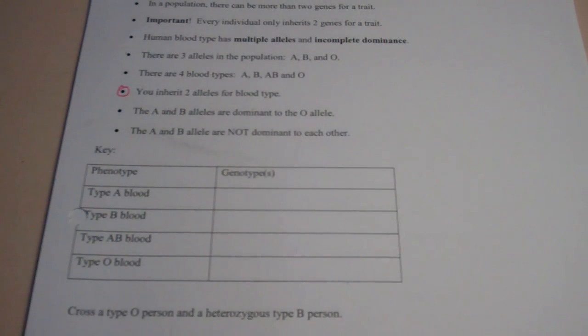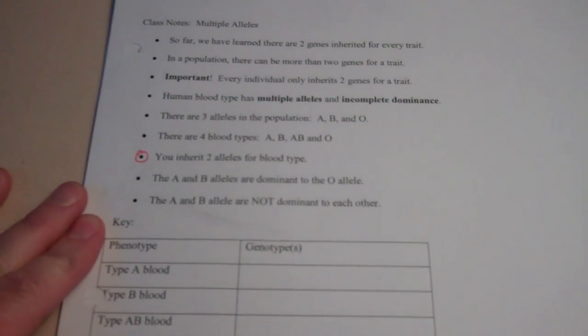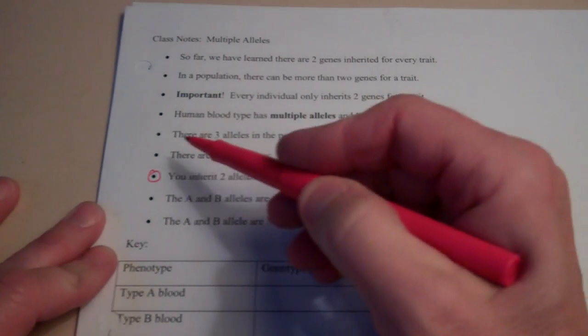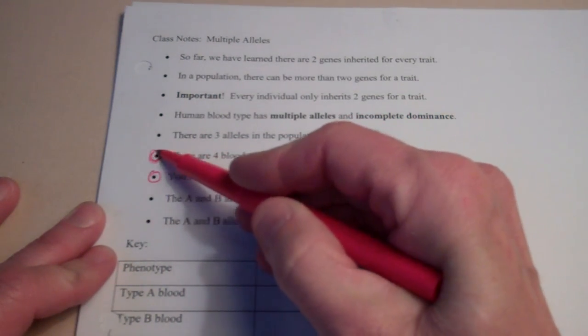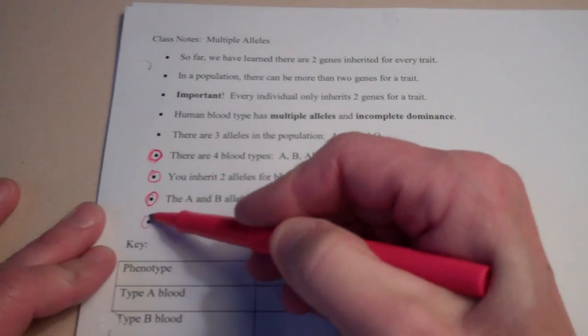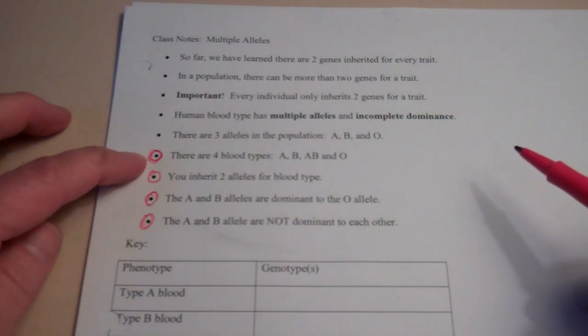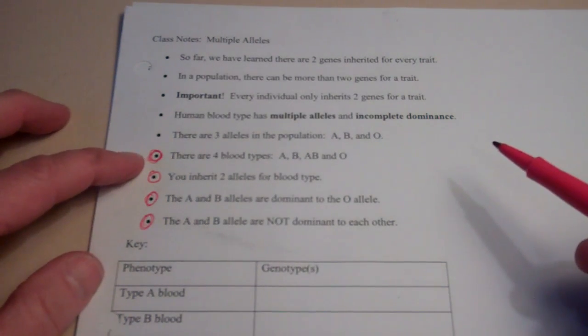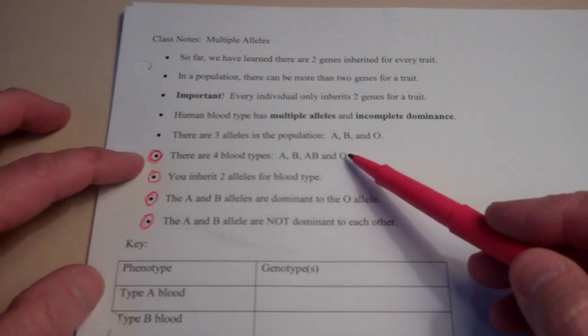Alright, so I'm going to let you read your notes on your own. I think I actually want to start with these bottom four bullet points. There's four blood types, type A, type B, type AB, and type O.